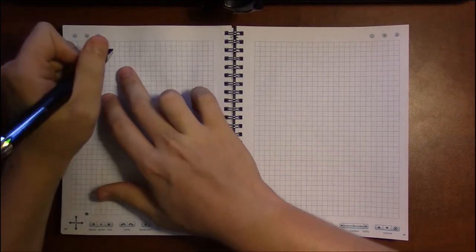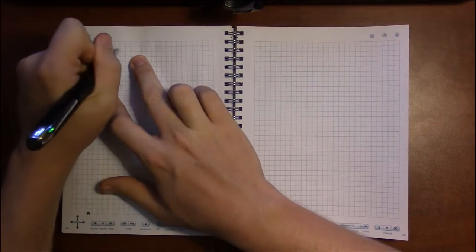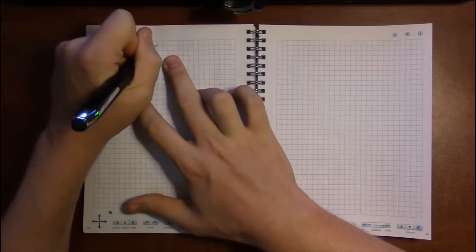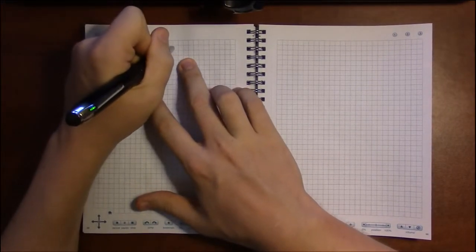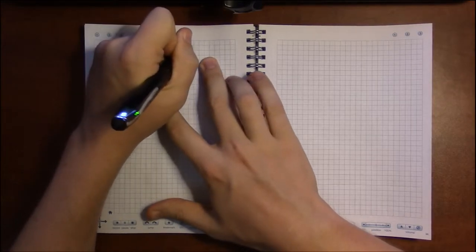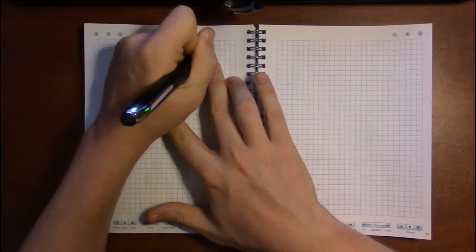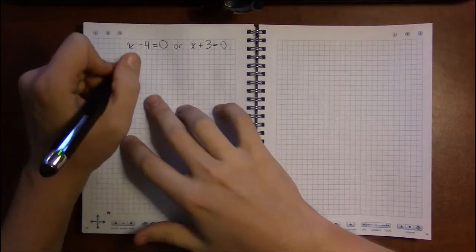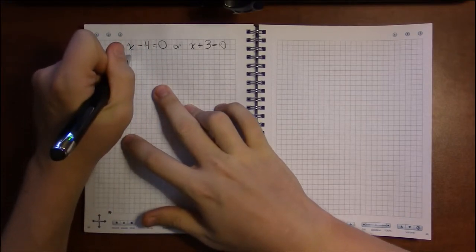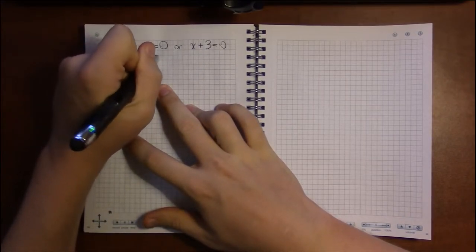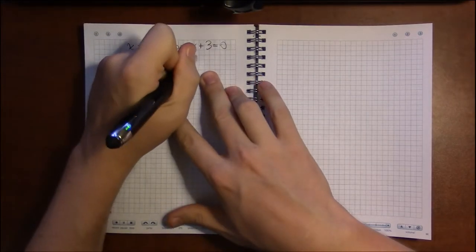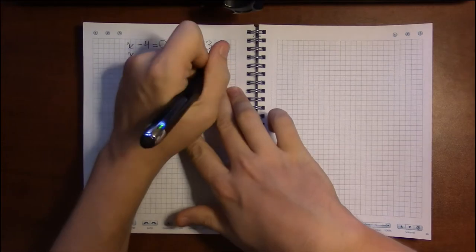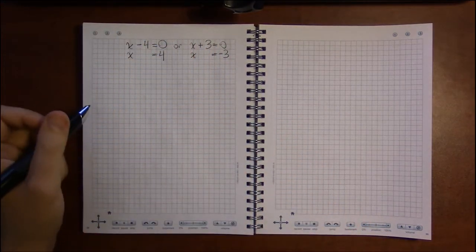So we have either x minus 4 being equal to 0, or we have x plus 3 being equal to 0. So on the first one, I add 4 to both sides and get that x equals 4. In the second equation, I subtract 3 from both sides and get that x equals minus 3.